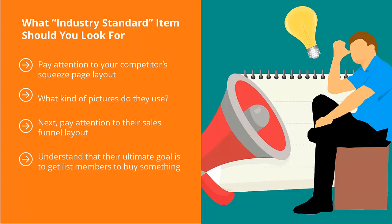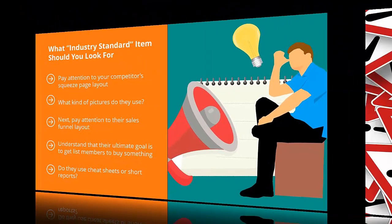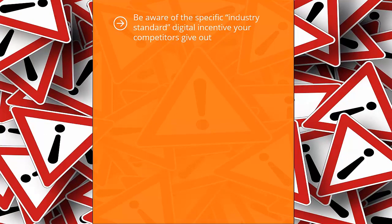Pay attention to the kind of freebies or incentives your competitors offer to get people to sign up to their mailing list. Do they use cheat sheets or short reports? Do they give away full books? Do they attract list members by offering a special video or some sort of insider information that people have to sign up to access? Be aware of the specific industry standard digital incentive your competitors give out, because you're going to have to offer the same. You can tweak this later, but you need to start out with this type of incentive.